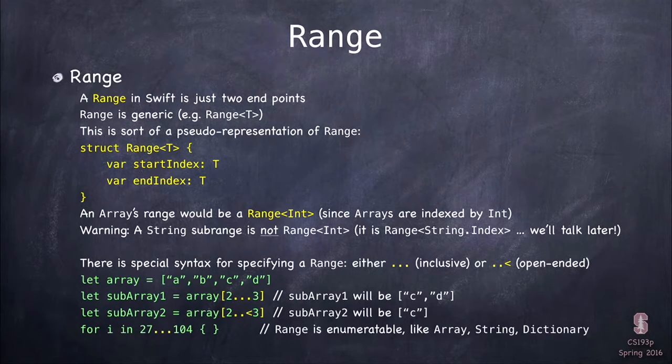Now, there's special, just like with optionals, we got question marks and exclamation points. There's some special syntax for ranges, which is this dot dot dot and dot dot less than sign. The dot dot dot, dot dot less than sign. This means a range right here that goes from two to three. This is a range that goes from two to three, but does not include three. So that would be just the number two right there.